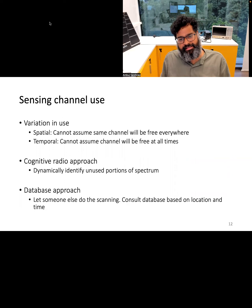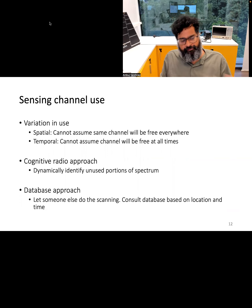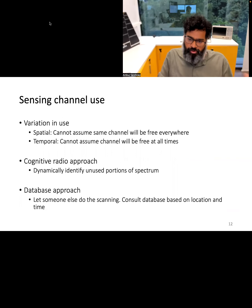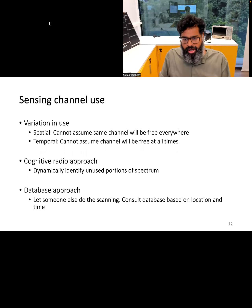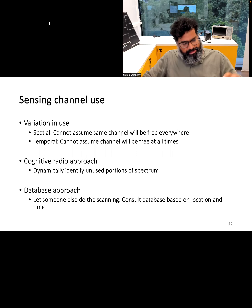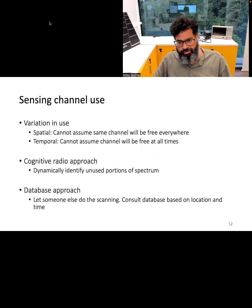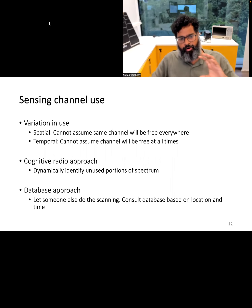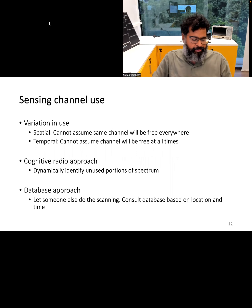To find the precise channel or space in the TV white space to use for wireless communication, one approach is to dynamically identify the frequency by scanning for free spots across the frequency range, finding where no transmissions are detected for a period of time, and then communicating at those frequency bands. Another approach is for someone to perform this scanning and create a database that you can consult to find available frequencies and time periods for your own communication.